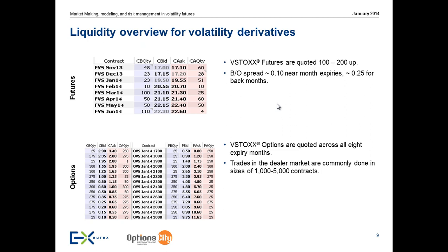The options are also quoted. We just had a new market maker who came active two weeks ago. In the dealer market, trade sizes of 5,000 contracts are very easily done and frequently observed.